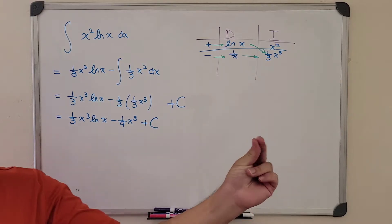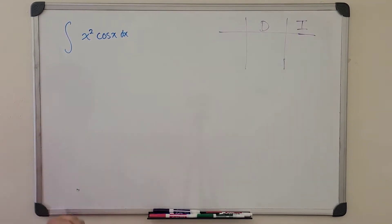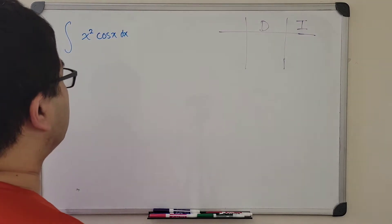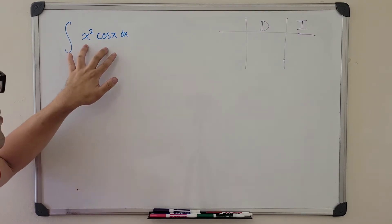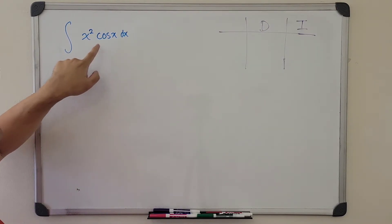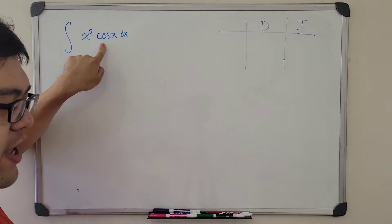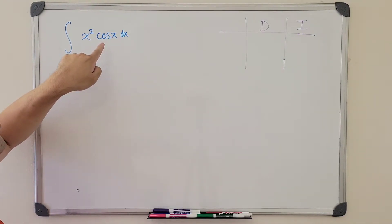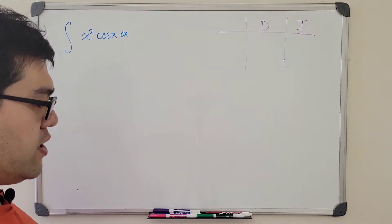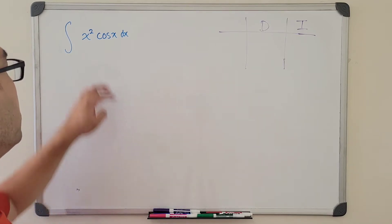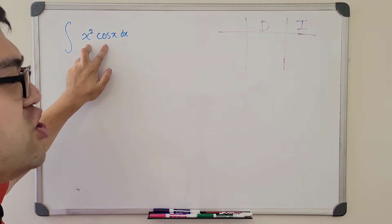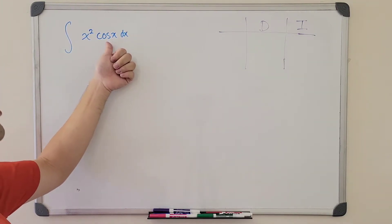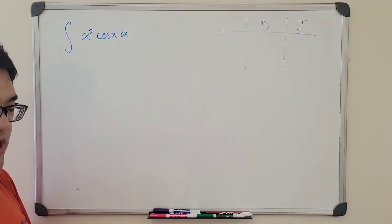Let's move on to the second problem. We're going to take the antiderivative of x squared times cos x dx. This time, we know the derivative and the integral of both x squared and cosine of x. But we need to ask ourselves which one will be easier or more beneficial if we're going to take the derivative. Let's take a look at cosine of x first.